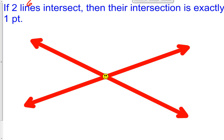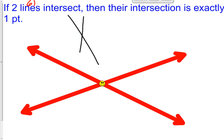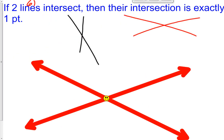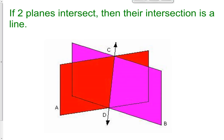Postulate number six: if two lines intersect, then their intersection is exactly one point. I can draw any two lines that intersect, and their intersection is always one spot — that spot is called a point. Similarly, if two planes intersect, their intersection is always a line. Picture the red rectangle as one plane and the purple color as another — when they intersect, their intersection is line CD. Think about a ceiling and a wall: where they meet runs from corner to corner, so their intersection is a line.